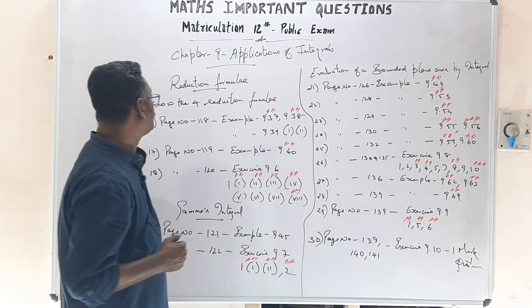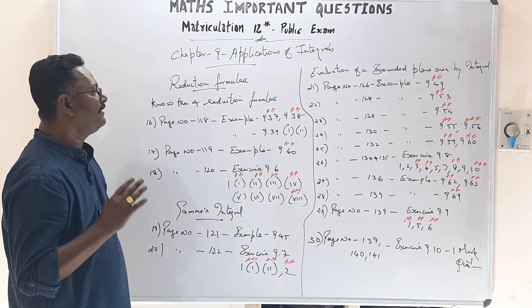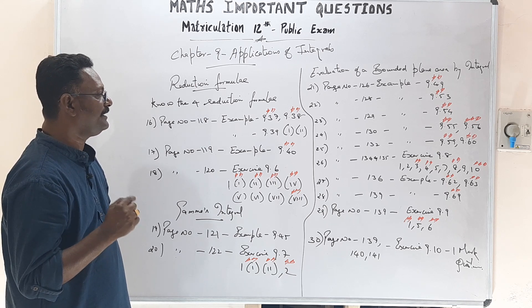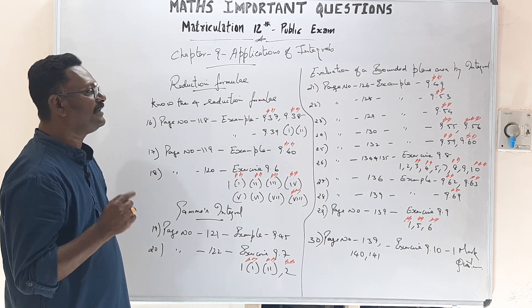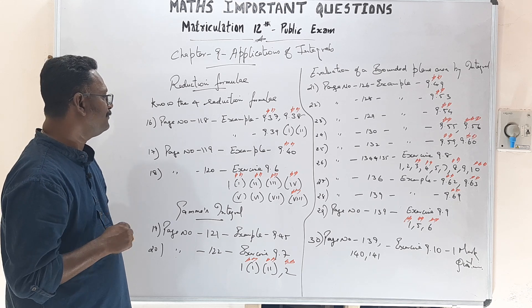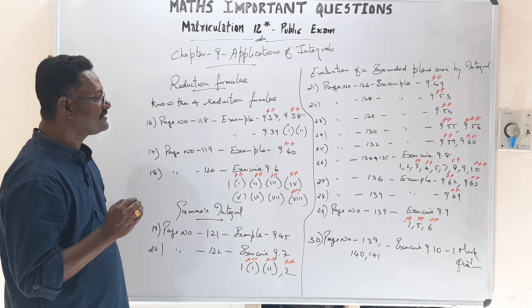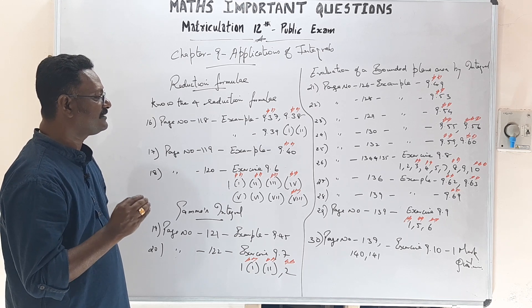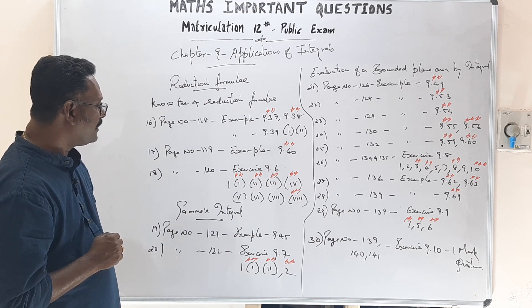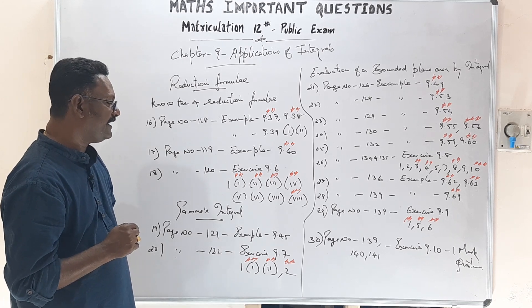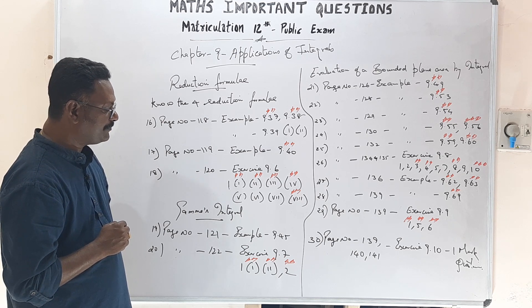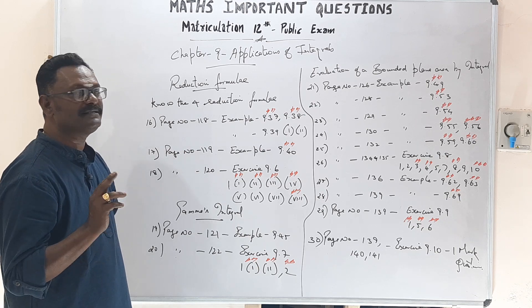Chapter 9.8, Page 117: Examples 9.37, 9.38, and 9.39 — lab first and second sub-questions are important. Page 119, Example 9.40. Page 120, Exercise 9.6, 1st Main lab — first, second, third, fourth, fifth, sixth, seventh, and eighth sub-questions are very important. At the topic Gamma's Integral: Page 121, Example 9.45. Page 122, Exercise 9.7, 1st Main lab — first and second sub-questions and the second sum.